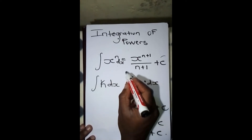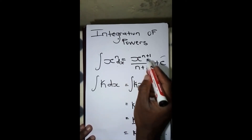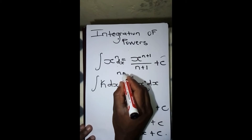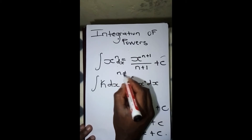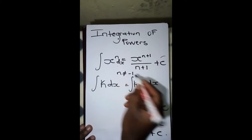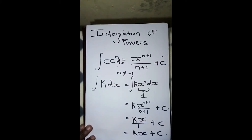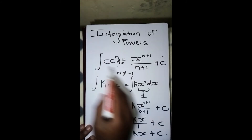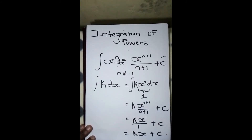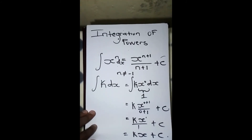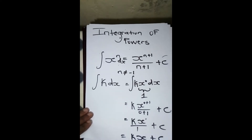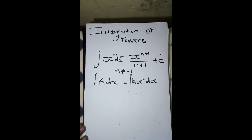We should take into consideration that n is not supposed to be negative one for this first rule. So what happens if n is negative one?